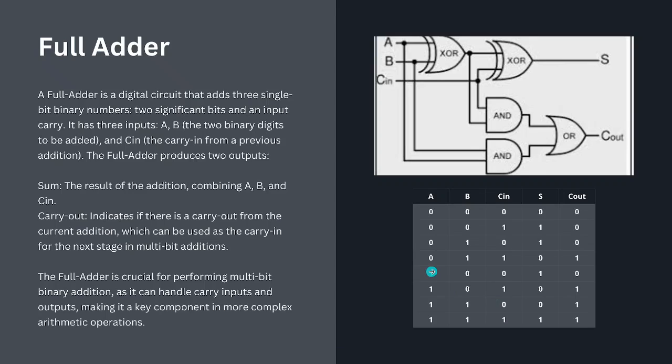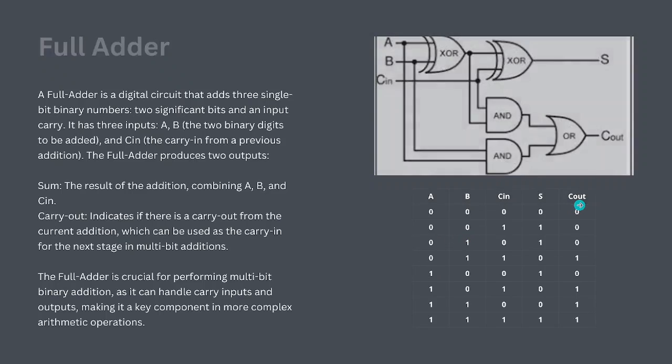Adders are integral to CPUs and other digital arithmetic systems. In an ALU they perform not only addition but also more complex functions like subtraction and multiplication when combined with other circuits. That wraps up our session on combinational circuits — today we covered multiplexers, decoders, and adders, all essential building blocks for more complex digital systems like CPUs and ALUs. In the next video we will explore sequential circuits, which involve memory and state. Don't forget to subscribe and hit the notification bell so you won't miss it. Thanks for watching!